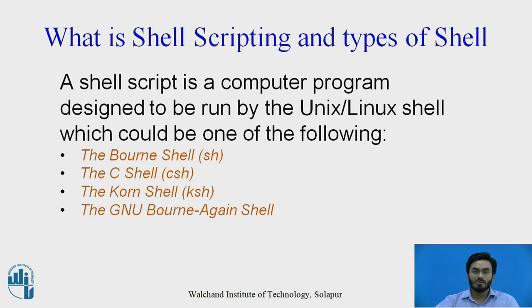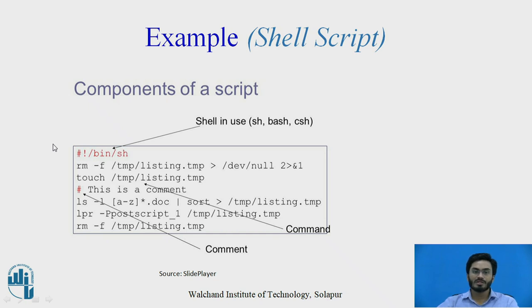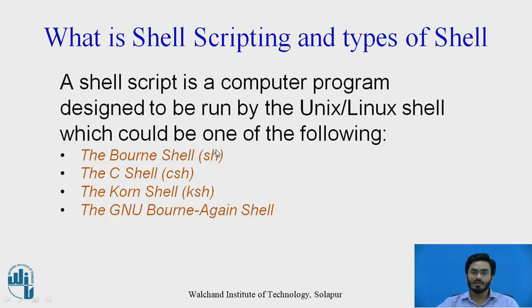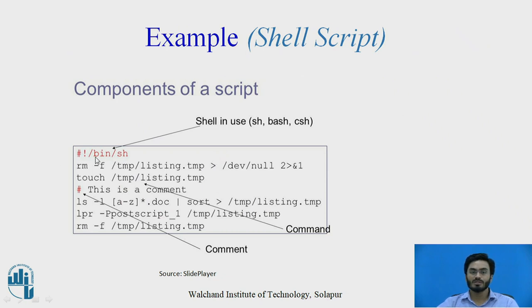Here are the four basic components of a shell scripting example. The first line is known as the shebang, which always starts with a hash sign followed by an exclamation mark and then the path to the shell. The first slash represents the root folder of the Linux operating system. Under the bin folder we have the type of shell — for a Korn shell it would be ksh. This is a Bourne shell, so we write sh. This shebang forms the first line of every shell scripting program.